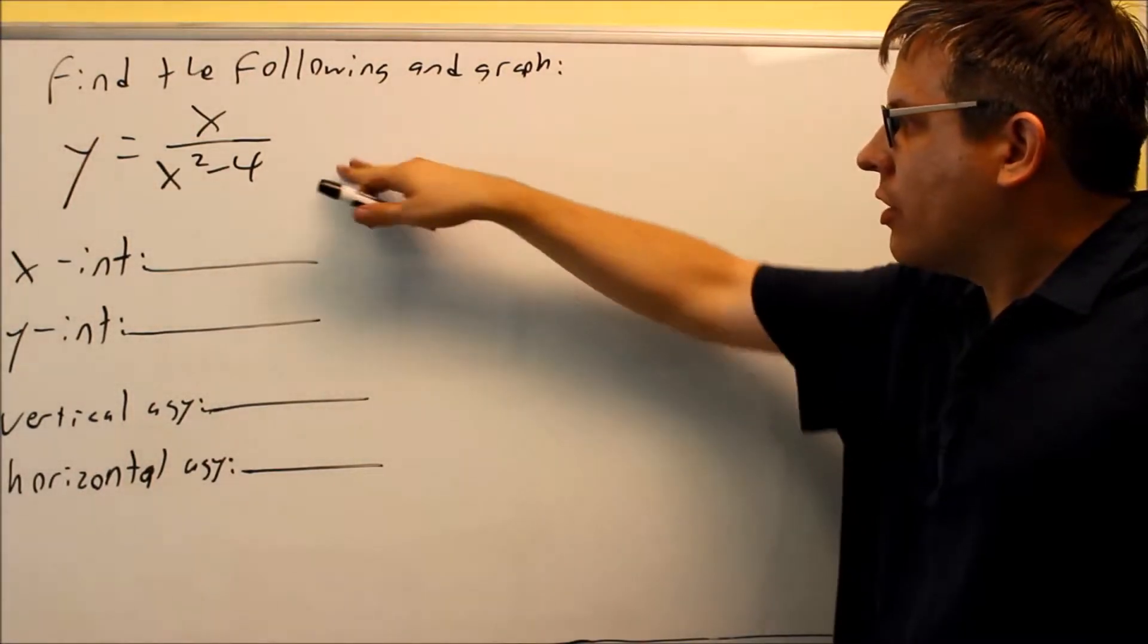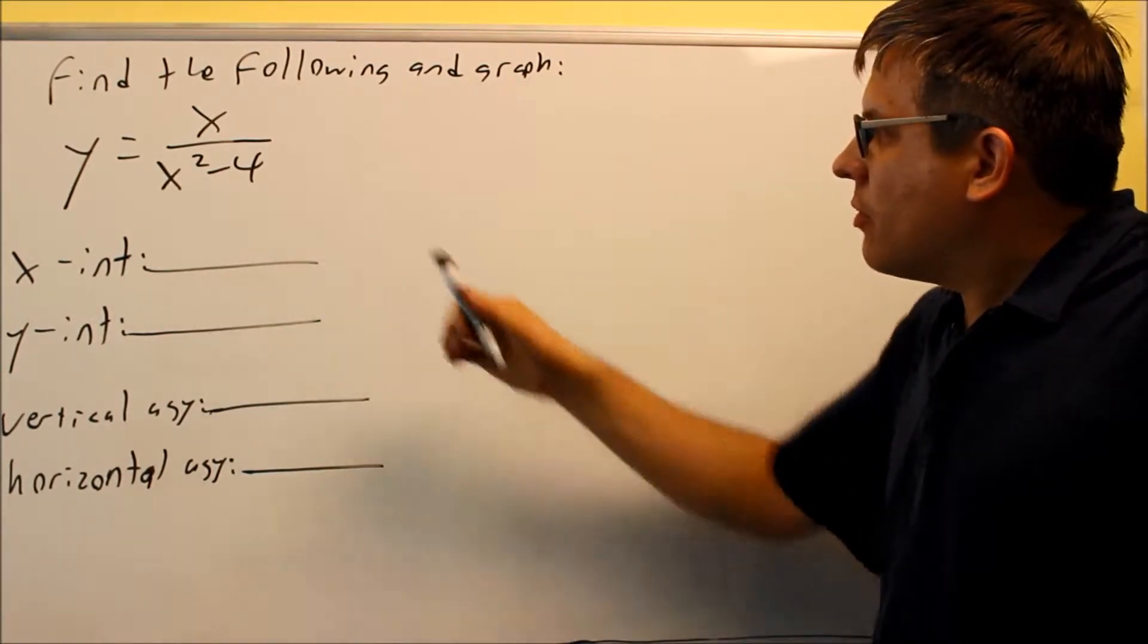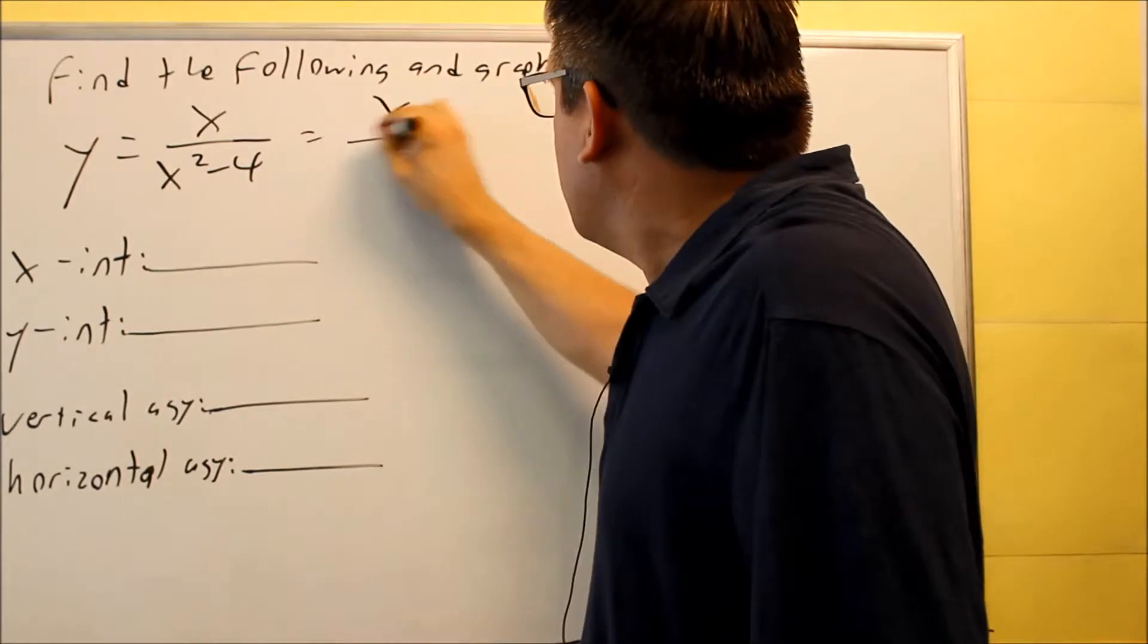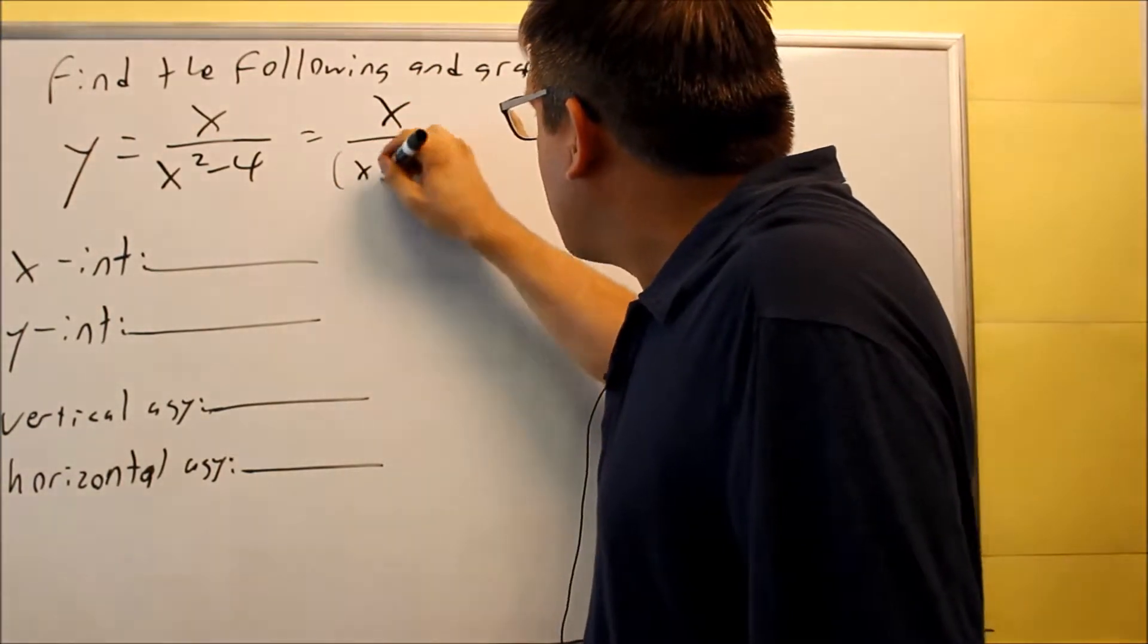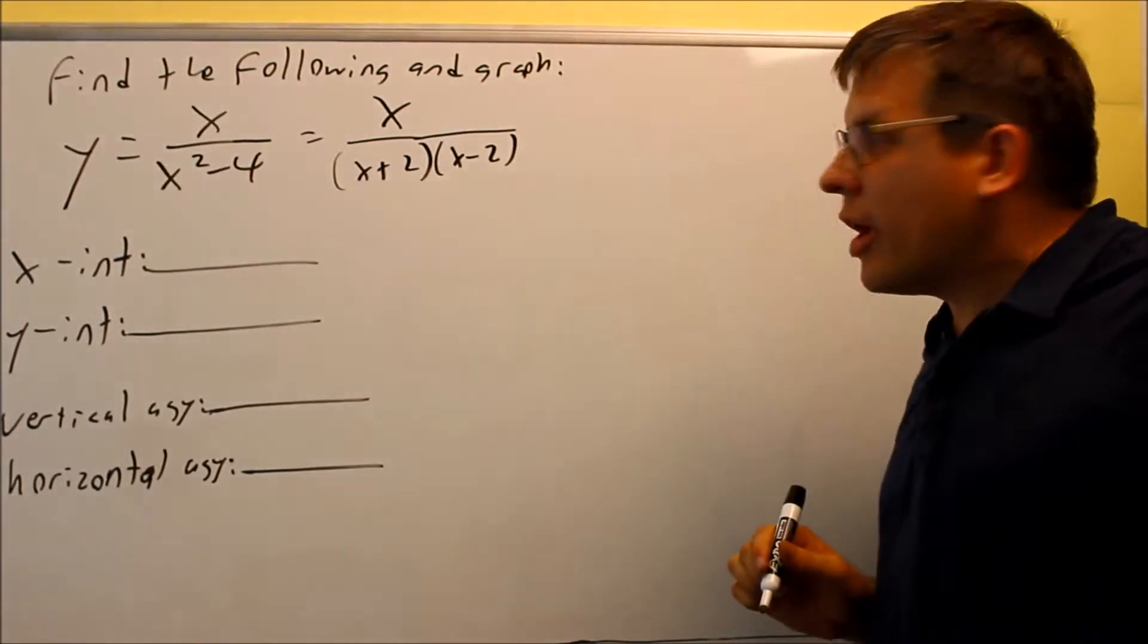Okay, we have another one we're graphing and finding the information for a rational function. X-intercept. For factoring-wise, there's nothing to really do on this one except X over X plus 2 and X minus 2. Nothing cancels, so that's as far as we need to go on that one.